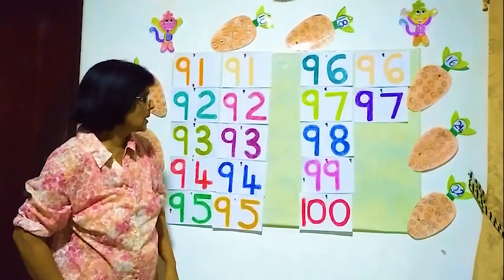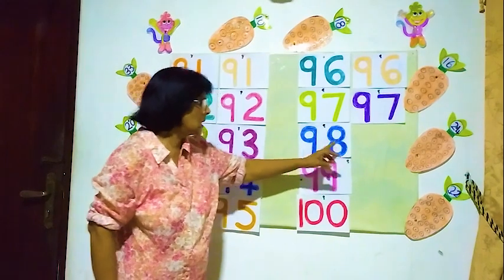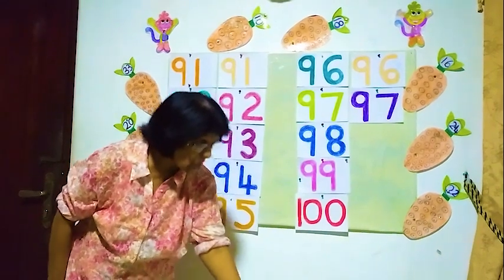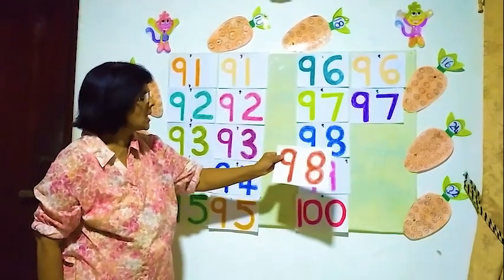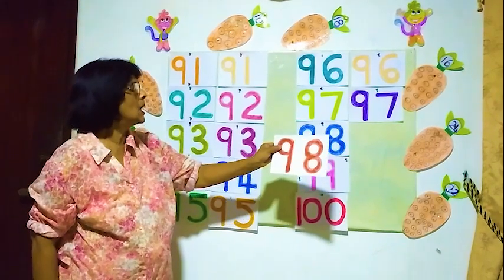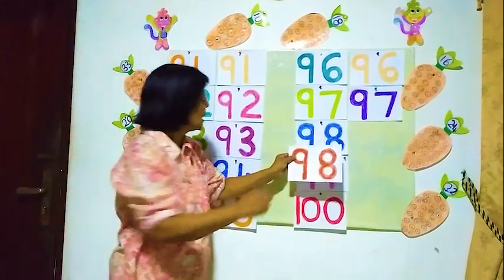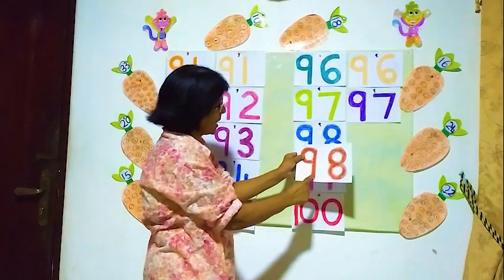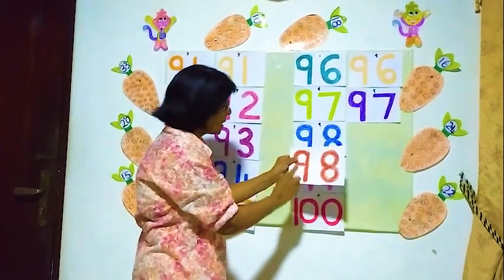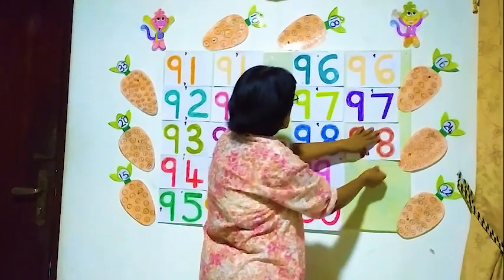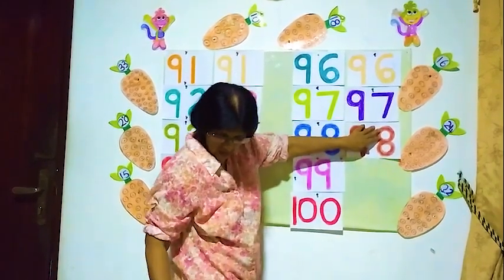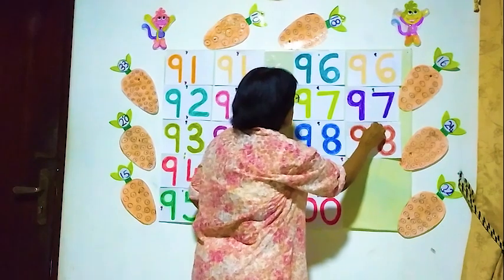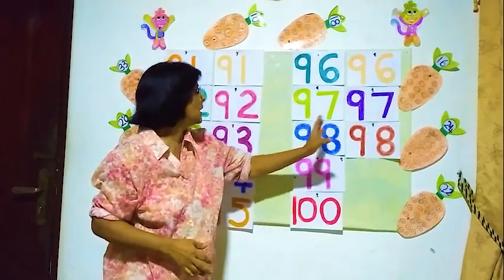The next one is 98. 98, same number: 9 and 8 — 98. Our lesson is matching the numbers, matching the figures. We have to find the same number and match it, fix it in front. Here 98 and 98.